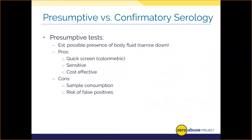Let's dig into the two phases of testing for body fluids in a forensic biology unit. Presumptive tests are just screening tests — typically color change-based — and can rapidly, within a few seconds to minutes, tell you if a sample is possibly a body fluid. This informs us as to what to do next, such as take it on to DNA or stop working on it if no body fluid is detected.